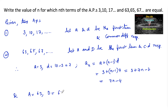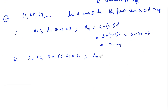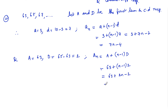For the second sequence, capital A = 63 and capital D = 65 − 63 = 2. The nth term is: A_n = A + (n − 1)D = 63 + (n − 1) × 2 = 63 + 2n − 2 = 61 + 2n.